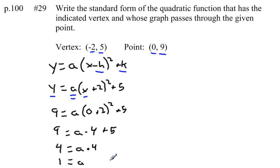Now, once I know that, let's take that value, let's put it back into this equation right here. And that will give us our standard form. Y equals 1 times x plus 2, quantity squared, plus 5. Is that 1 necessary? No, it's not. I'll keep it on there just as part of my answer.